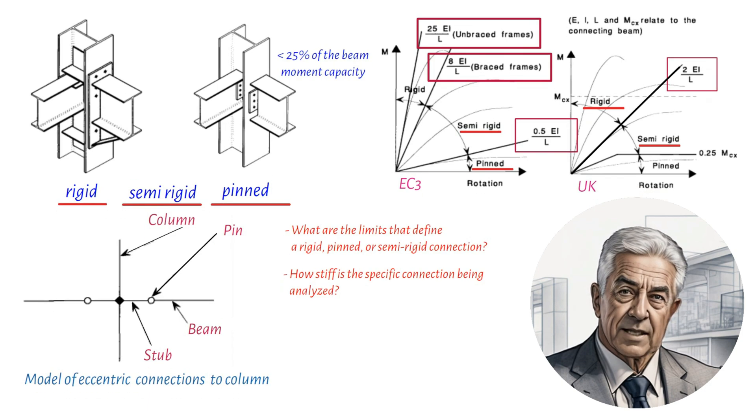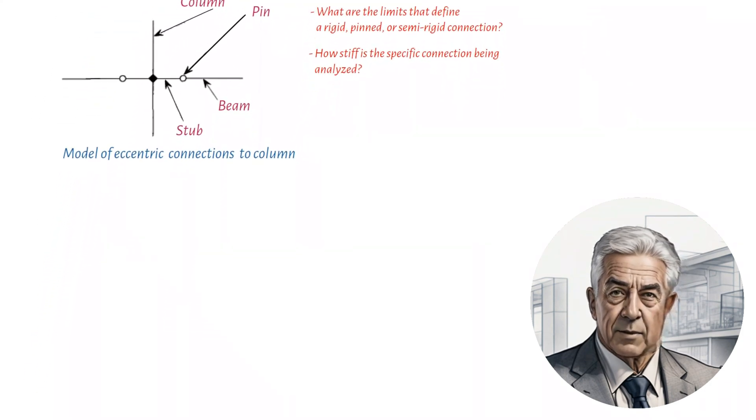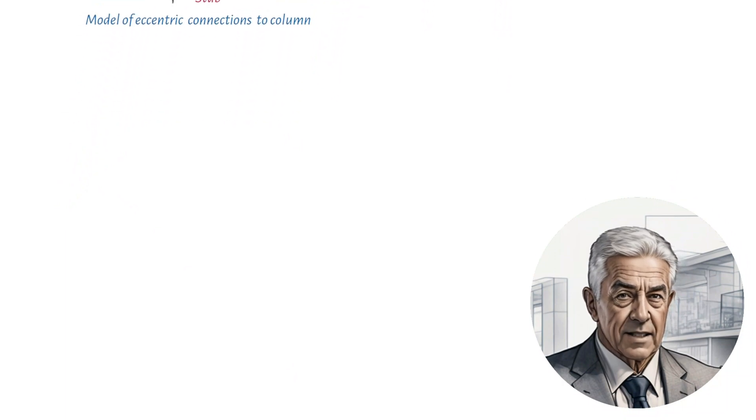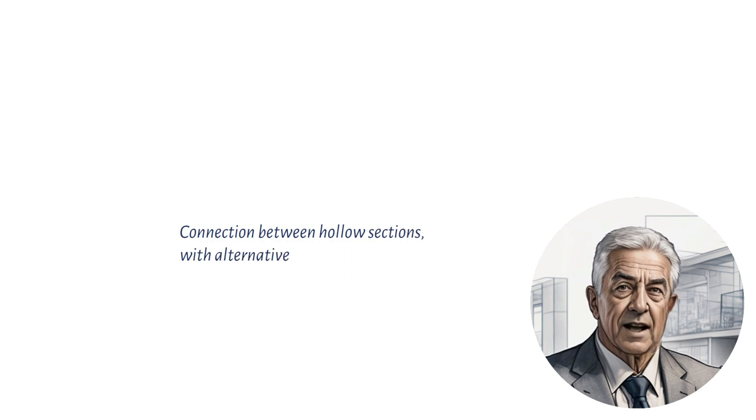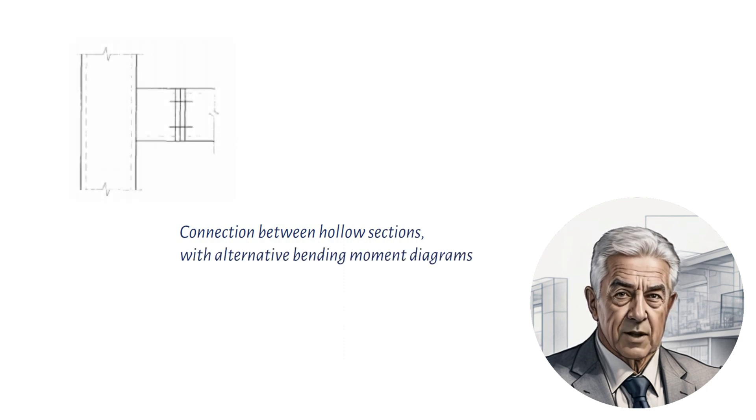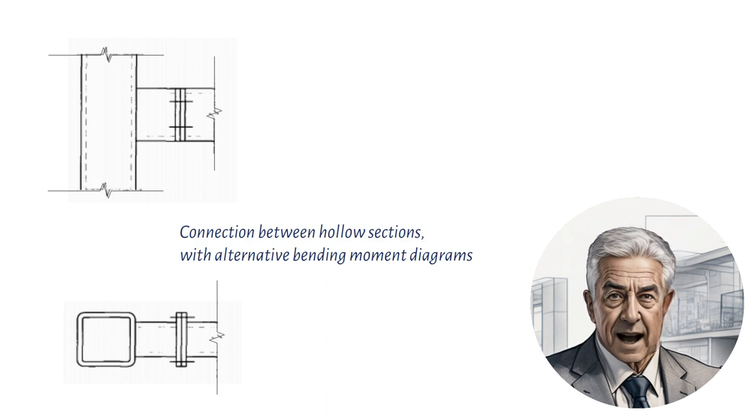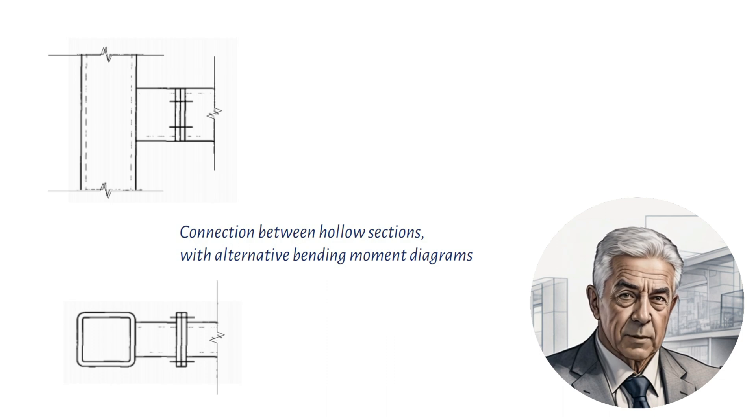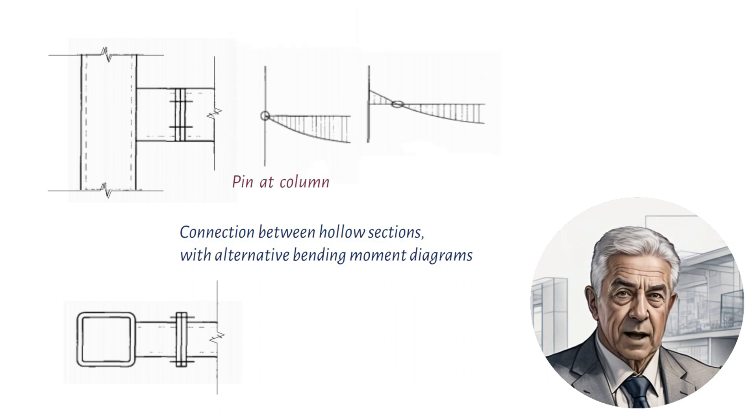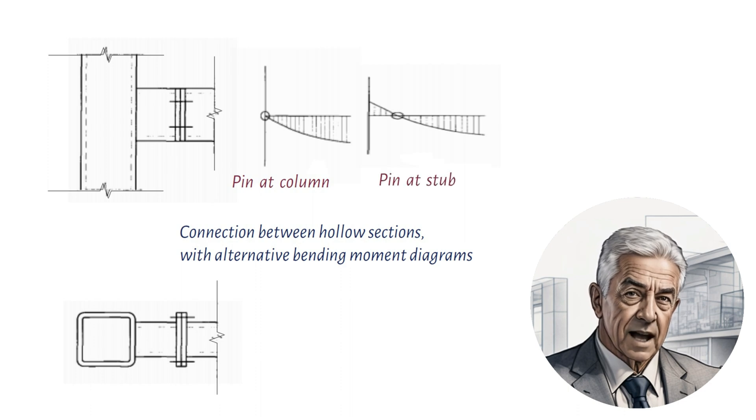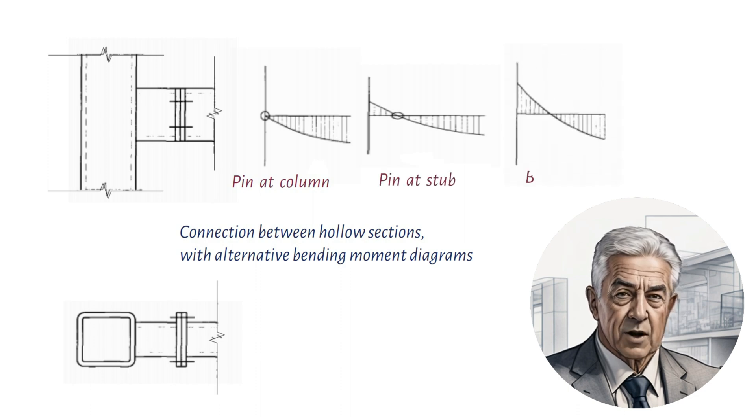However, when the connection is some distance from the column center line, the modeling becomes more complex. For example, in the case of a hollow section beam-to-column connection, if the beams are not site-welded to the columns but bolted via flange endplates, the connection must be made some way from the face of the column. The bending moment diagrams can be rigid or pinned, depending on the flange plate beam-to-beam connection and flange plate beam-to-column connections.